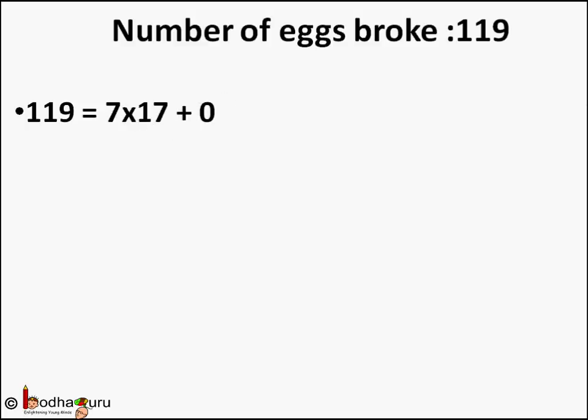119 equals 6 into 19 plus 5 — that is, 119 divided by 6, 19 is the quotient and remainder is 5.